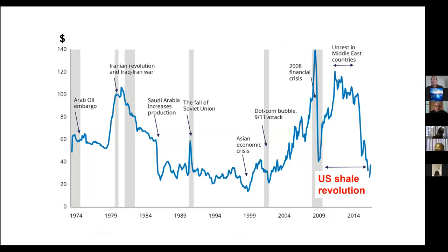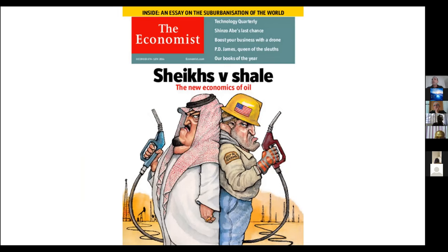Fracking has also had a huge impact on the price of oil and gas around the world. The overall decrease in oil price per barrel starting around 2014 is thought to be a direct result of a glut in cheap oil and gas coming from fracking. It was summarized by The Economist with a front page that basically pitted Arab oil producers against American frackers, and this conflict was what controlled oil and gas prices, causing the reduction in price in 2014.